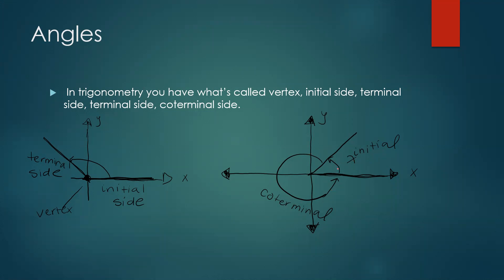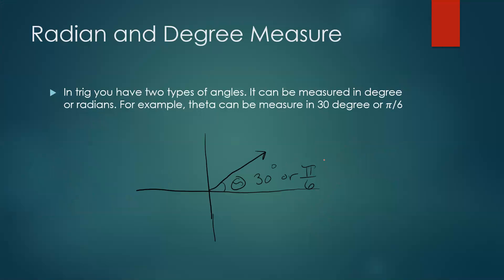This is just an example. If you wanted to find the coterminal, just remember that going around the unit circle is 360 degrees. In trig, you will have two types of angles — it can be measured in degrees or radians. For example, theta can be measured as 30 degrees or pi over 6.